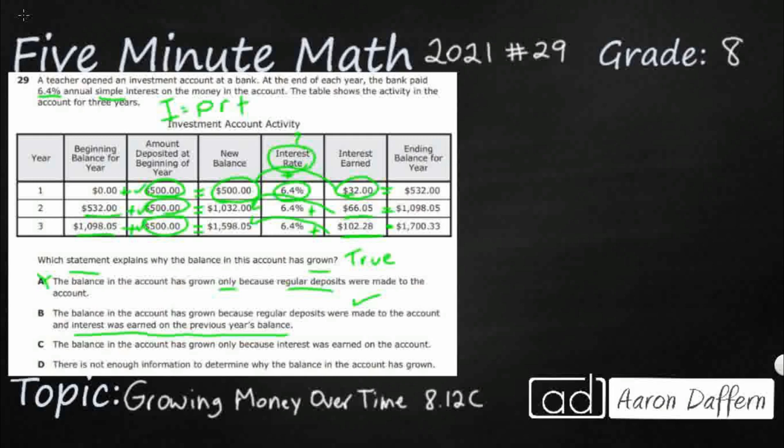Let's check C. The balance in the account has grown only because interest was earned. Now, see, look at this. C is kind of like A. It's only looking at one source of growth, the interest. What about our deposits? We need our deposits. That's incorrect.